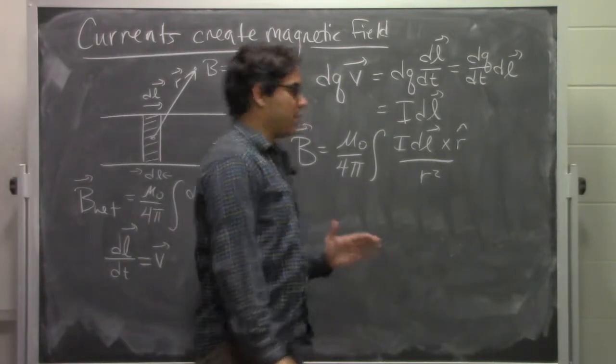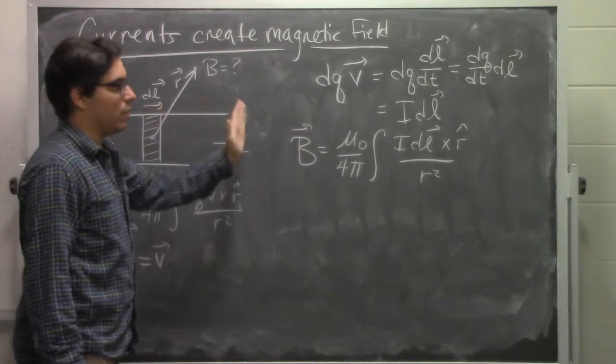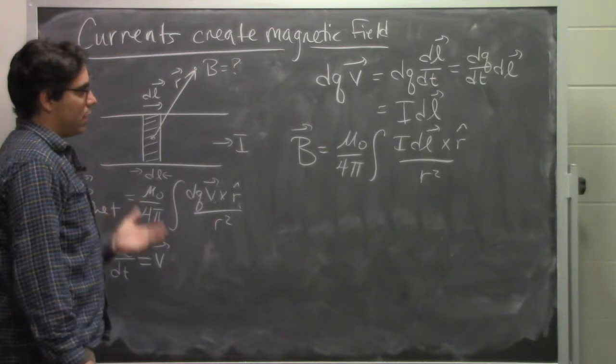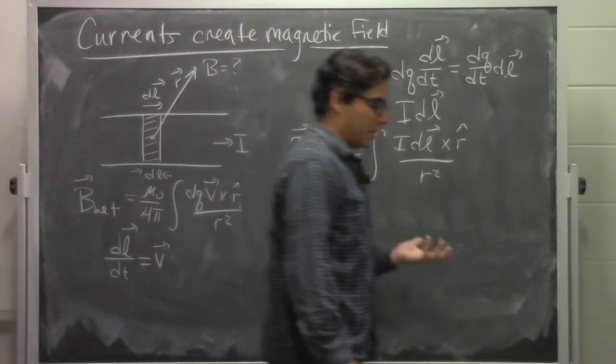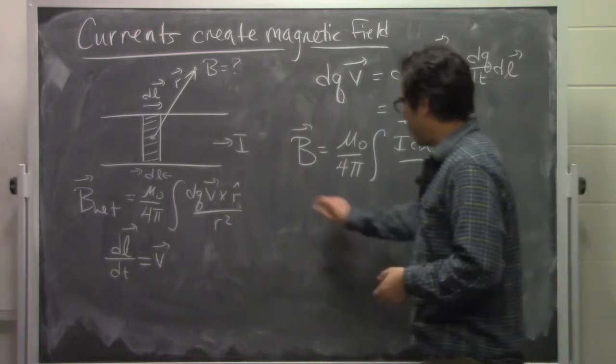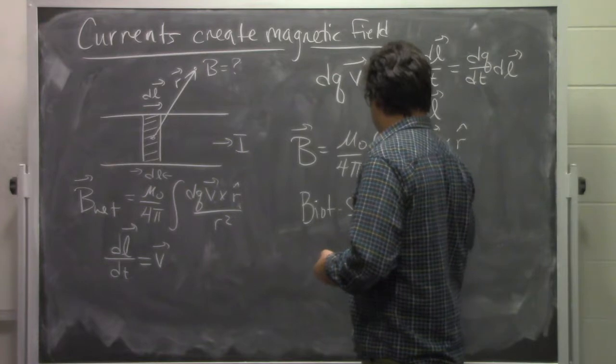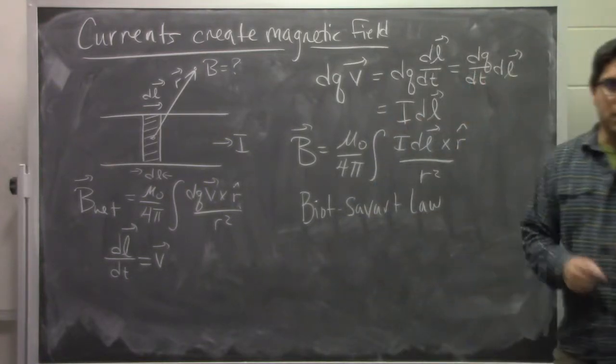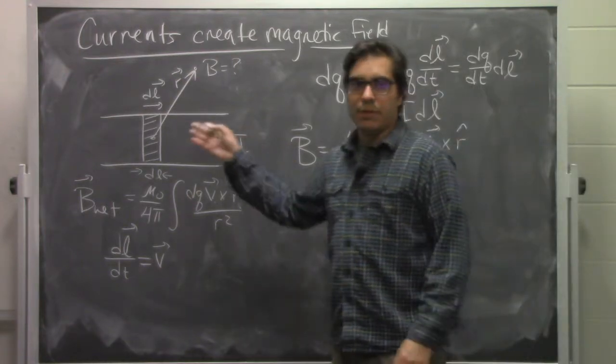What we're doing is we're actually adding up all the contributions to all these little slivers as we move along instead of individual charges. This is a pretty sophisticated way of doing this calculation. It has a special name. It's called the Biot-Savart law.